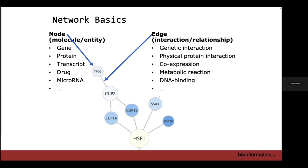So, the network basics: a network consists of nodes and edges. How you define your network is up to you. In biological networks, we can say that our nodes are genes, proteins, transcripts, drugs, or microRNAs. In a social network, the node could be a person. The nodes are connected to other nodes via edges, and that edge is also dependent on how you define it. In biology, it could be a genetic interaction, a physical interaction, two genes that are co-expressed, or DNA binding a regulatory molecule. The premise of a network is: you have a node, and it connects to something else via an edge.